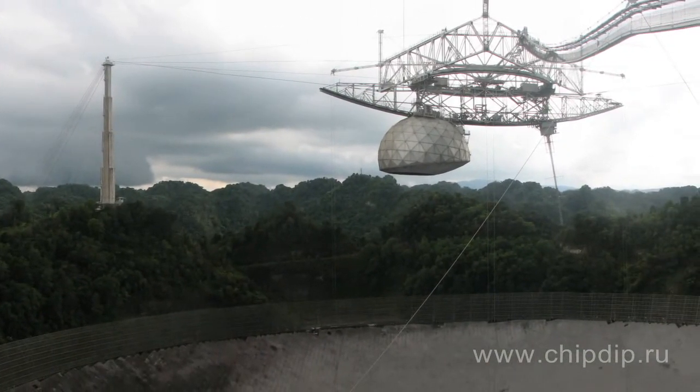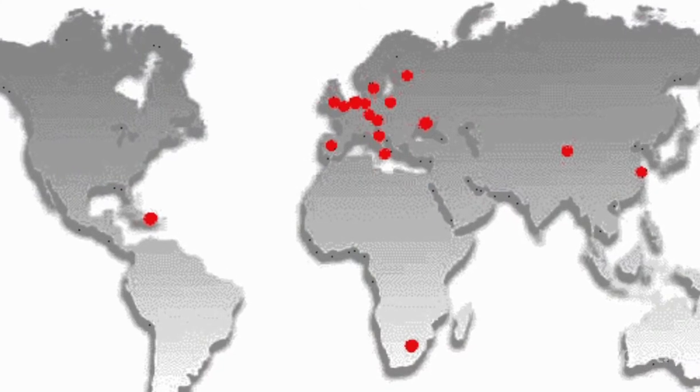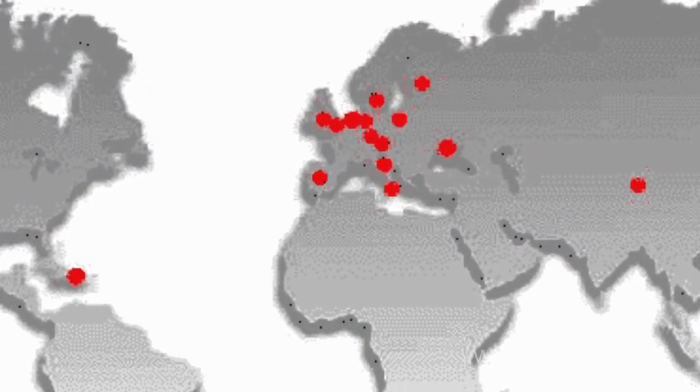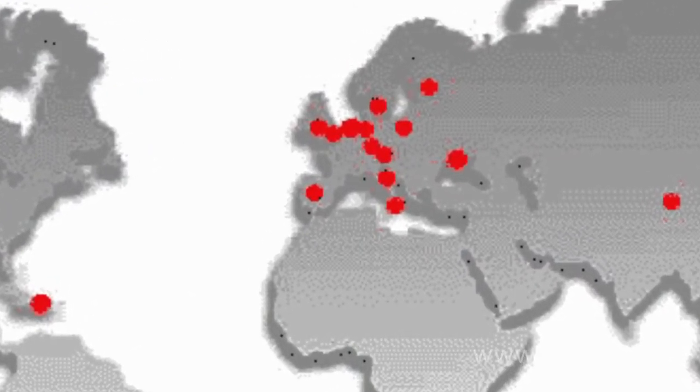Radio telescopes enjoy wide application — you can find them in Russia, Italy, Ukraine, and many other countries. They provide astronomers with essential information. In addition to optical and radio telescopes, other types are also available designed for other wavelength ranges, for instance, X-ray and gamma radiation telescopes.